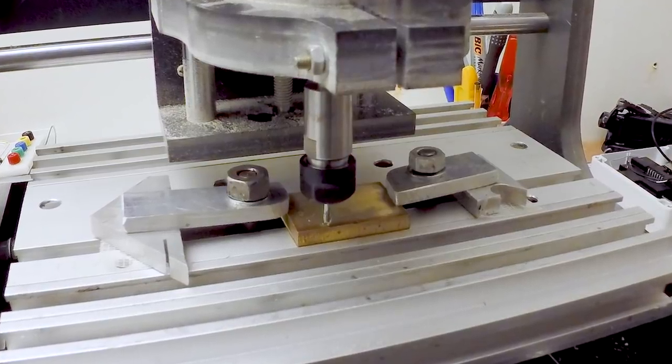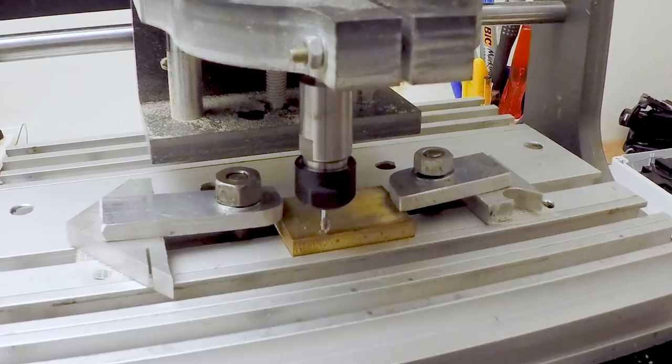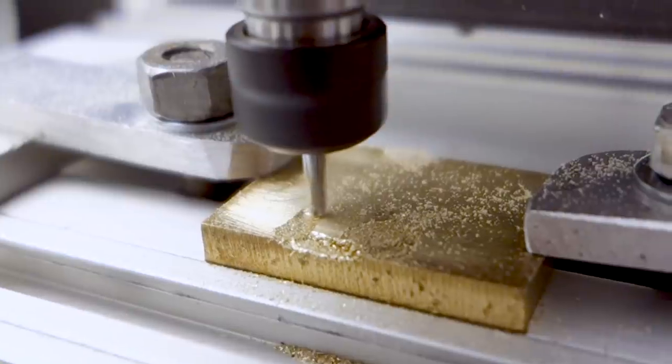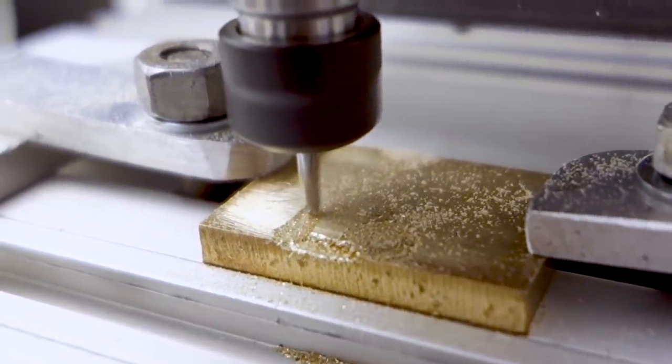Now I know what you're going to ask. What about metal? Can it mill metal? Show it milling metal! Ok ok ok, hold on to your horses. Here we go, milling a small brass fusion F at slow feed rate with hardly any depth of cut.